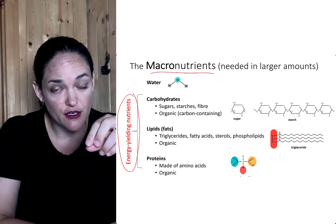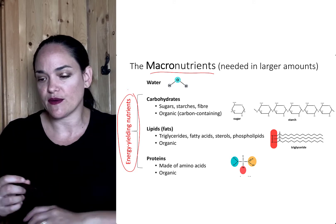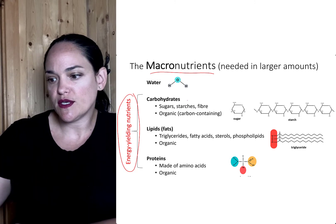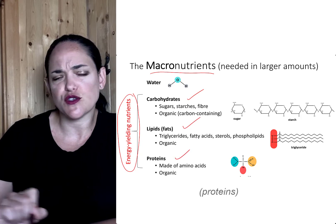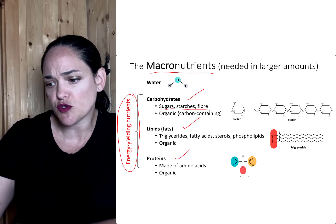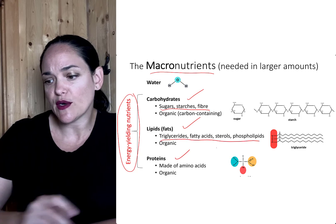We measure energy in kilocalories in Canada. These three nutrients — carbohydrates, lipids, and proteins — you'll sometimes notice that there are several different types of nutrients within these categories.